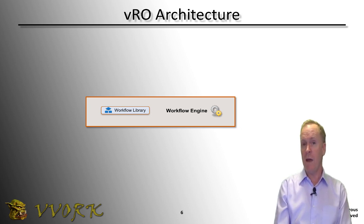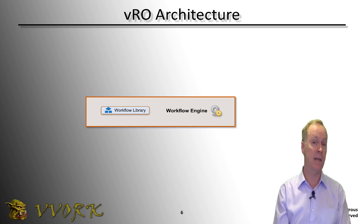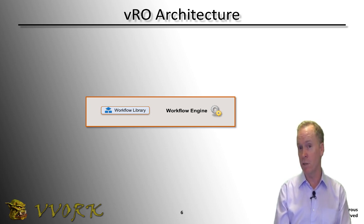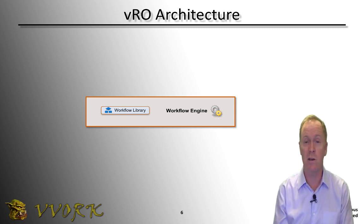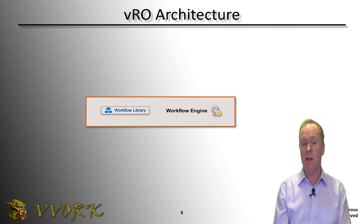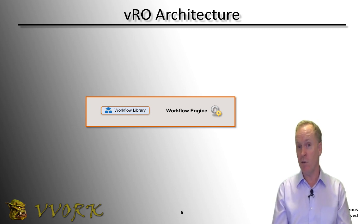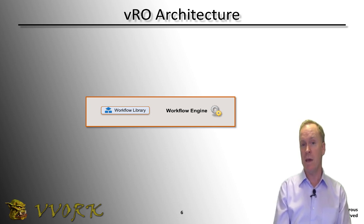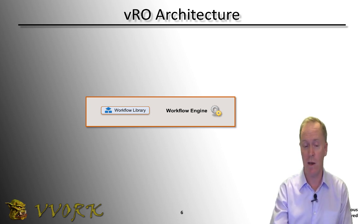You may not have to create a whole lot of Orchestrator workflows, though, because Orchestrator already comes with a library of hundreds and hundreds of predefined workflows. If you do want to write your own workflow, oftentimes you don't have to write it from scratch — you just take existing workflows from the library and use them like building blocks, assembling them to make your workflow do whatever you want.